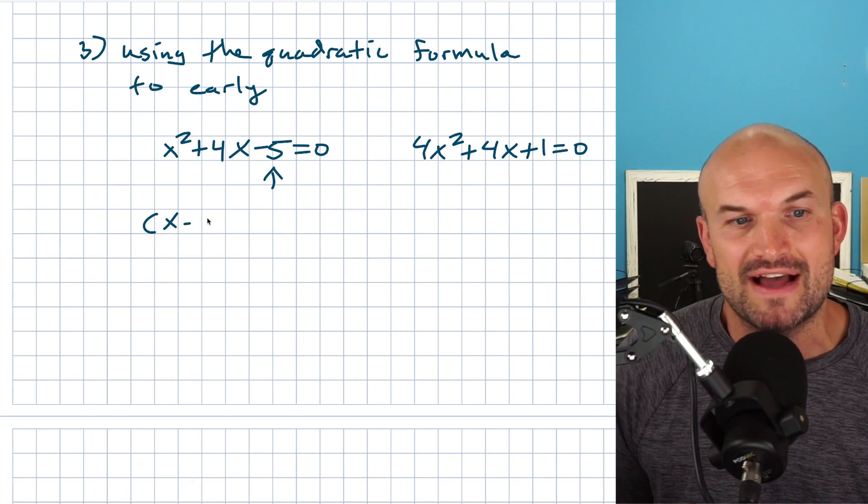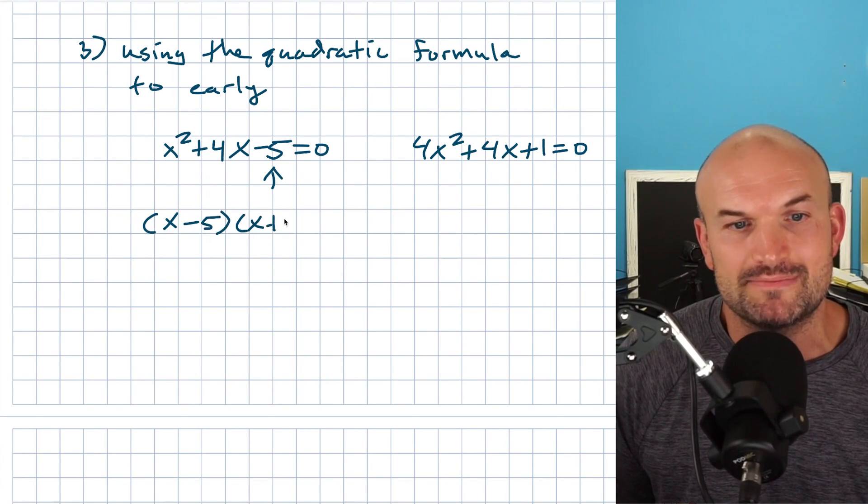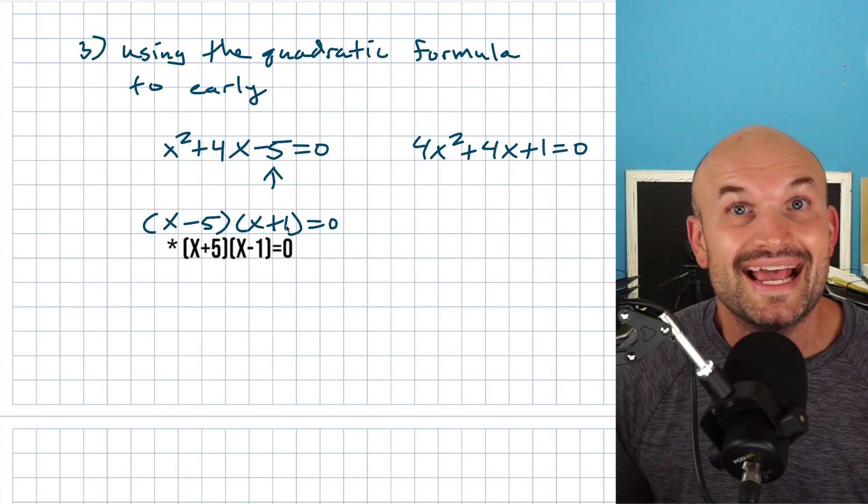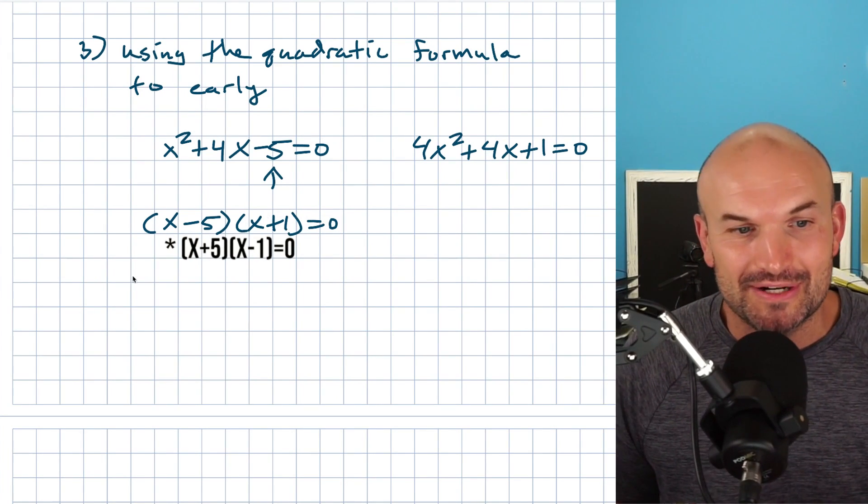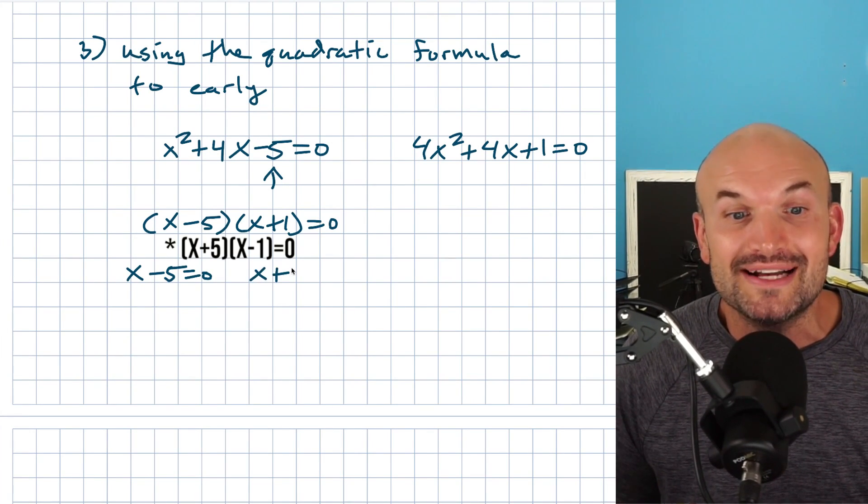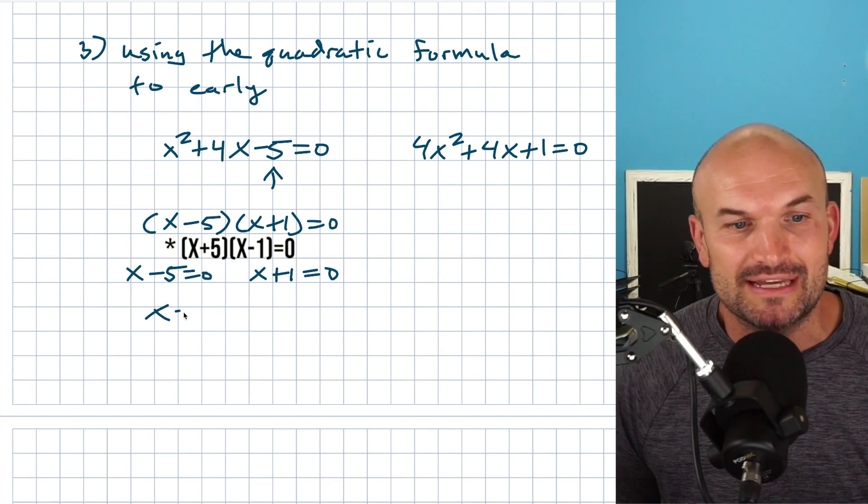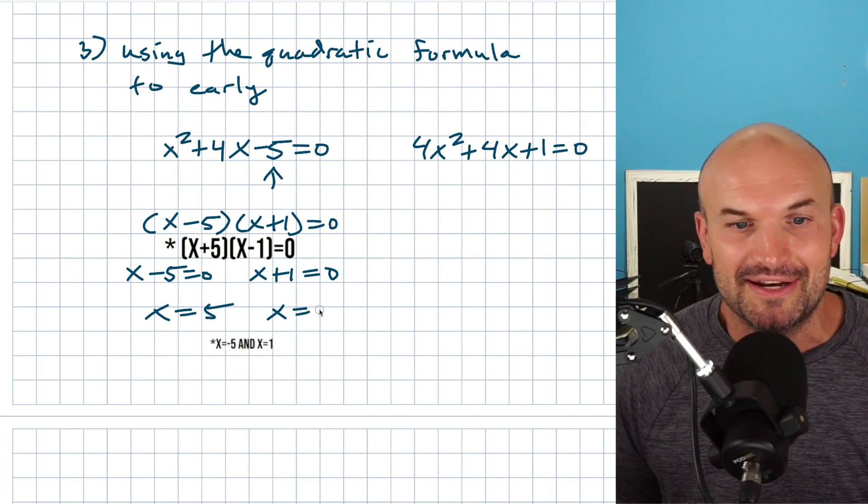I can quickly and easily factor this to an X minus five times an X plus one is equal to zero. And hey, guess what? I have a product equal to zero, not any number, a product equal to zero. So therefore I can actually use the zero product property correctly this time, not a mistake to actually get my answer. So that's actually kind of cool.